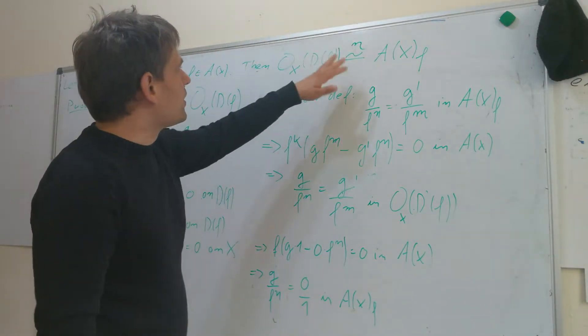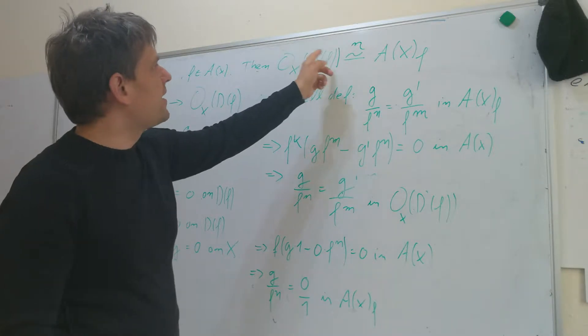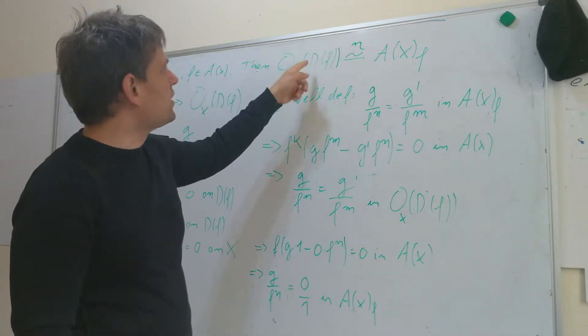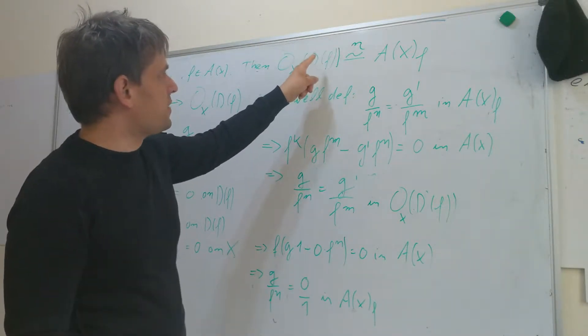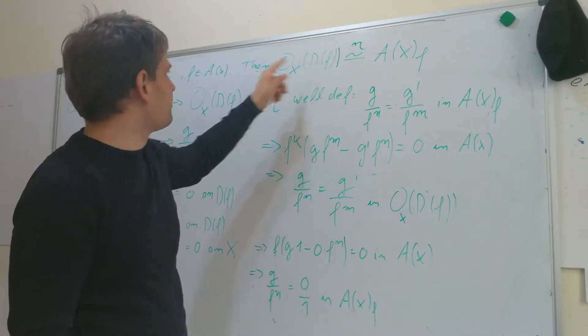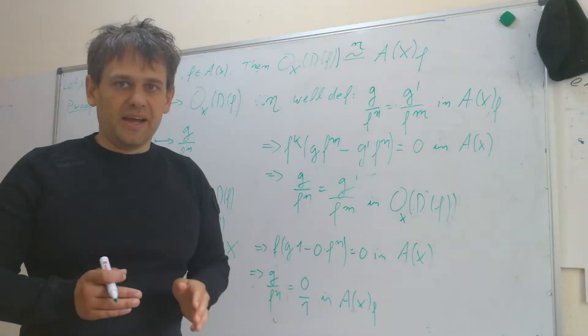Mainly, we are going to see that there is an isomorphism of k-algebras between the k-algebra of regular functions on the distinguished open subset df, for f in the coordinate ring Ax.